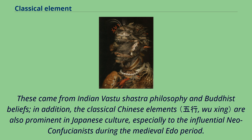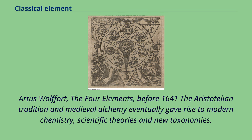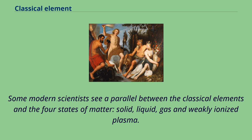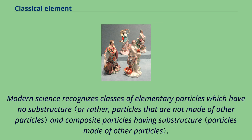The Aristotelian tradition and medieval alchemy eventually gave rise to modern chemistry, scientific theories, and new taxonomies. By the time of Antoine Lavoisier, for example, a list of elements would no longer refer to classical elements. Some modern scientists see a parallel between the classical elements and the four states of matter: solid, liquid, gas, and weakly ionized plasma. Modern science recognizes classes of elementary particles which have no substructure and composite particles having substructure.